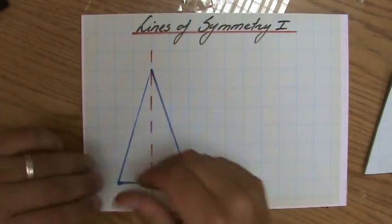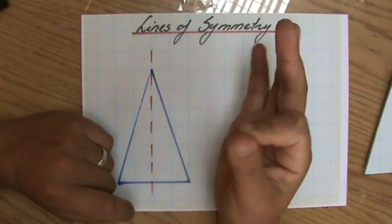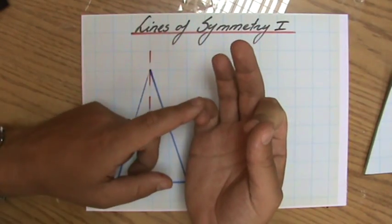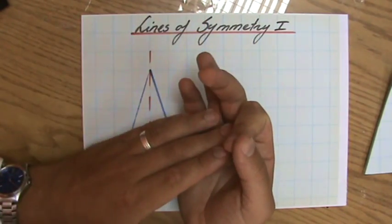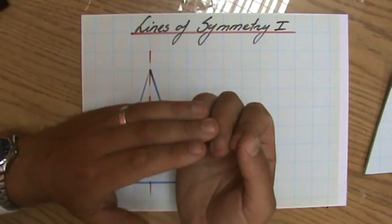Welcome to this playlist about symmetry. We're going to have a look at three types of symmetry: line symmetry, planes of symmetry, and rotational symmetry.